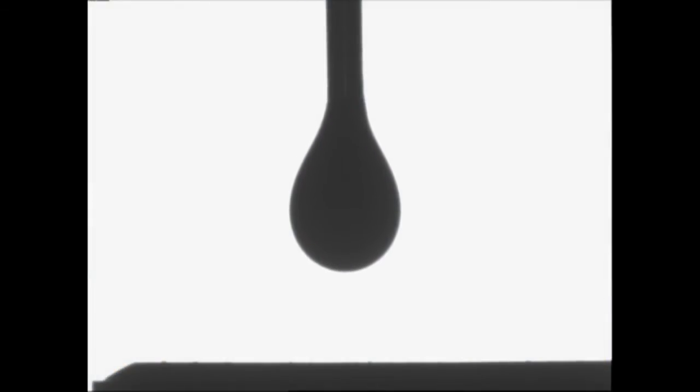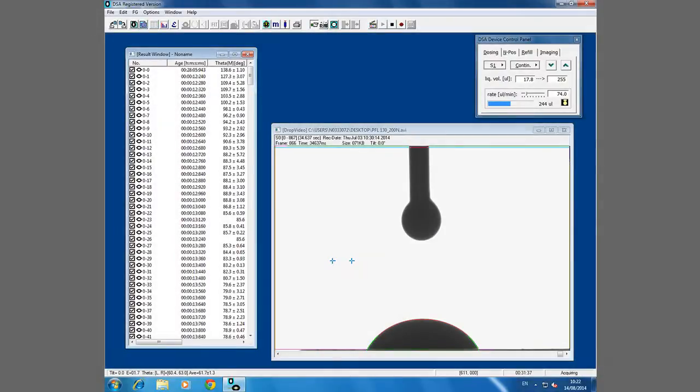In some cases, we may wish to observe the change in contact angle over time, such as in this clip. We can set the software to record a video and then determine the contact angle in each sequential frame.